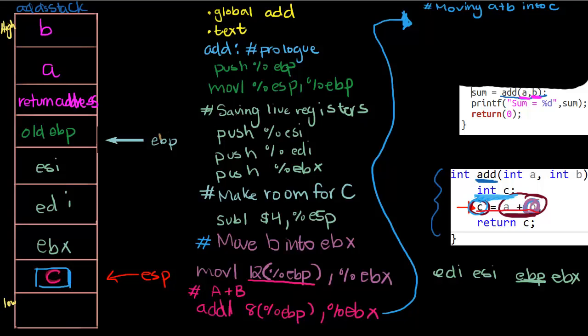How do we do this? Well, we know C is negative 4, negative 8, negative 12, negative 16 under EBP. We'll move A plus B which right now is in EBX to negative 16 past EBP. Now we can finally get to our last line, but this last line is going to take two lines in assembly.